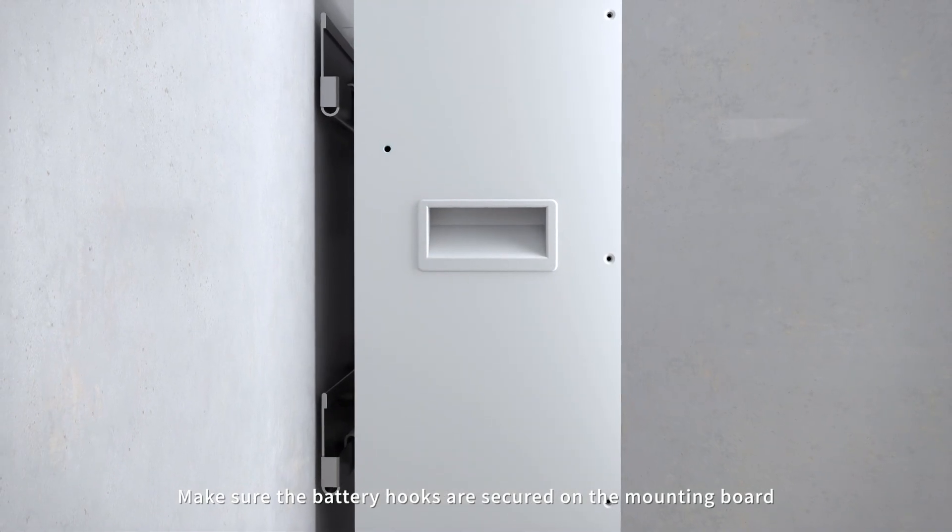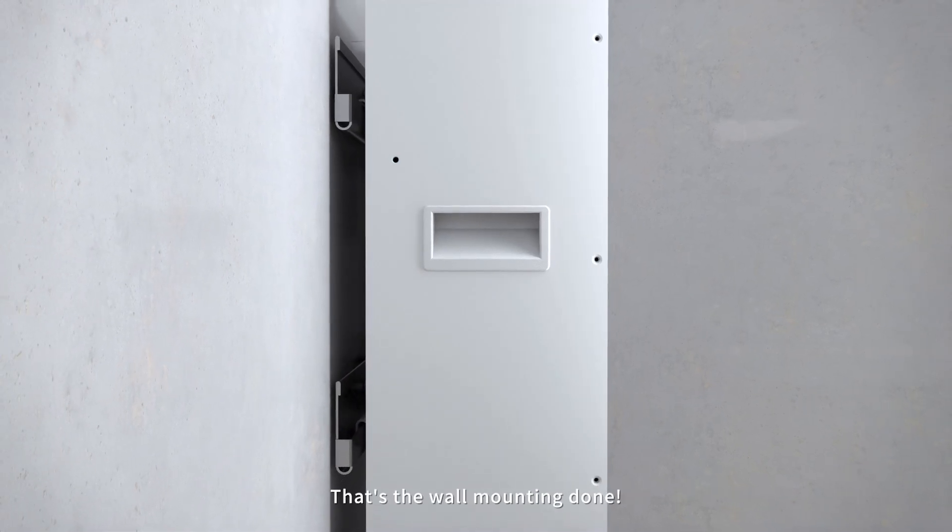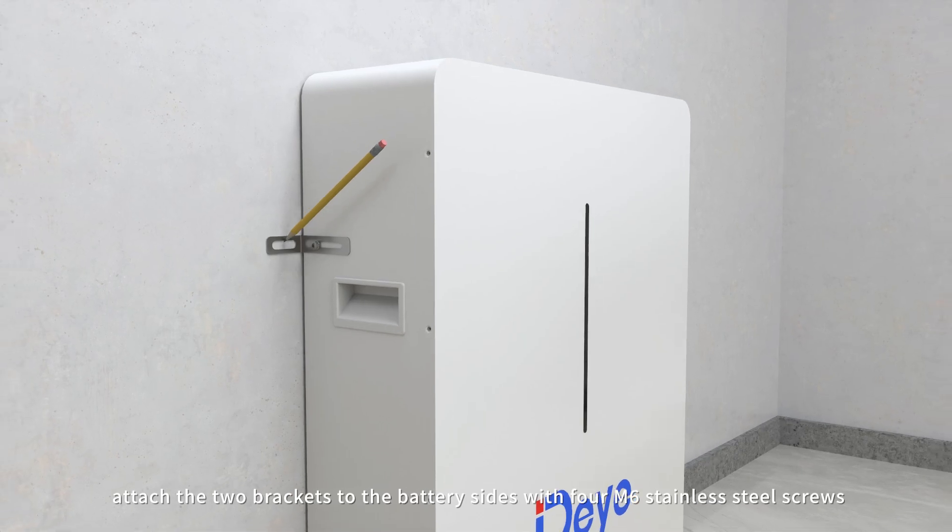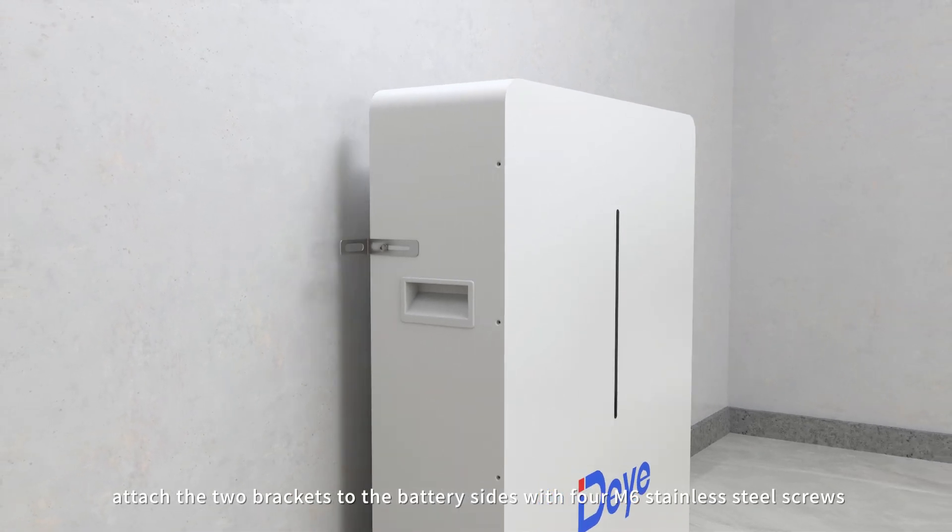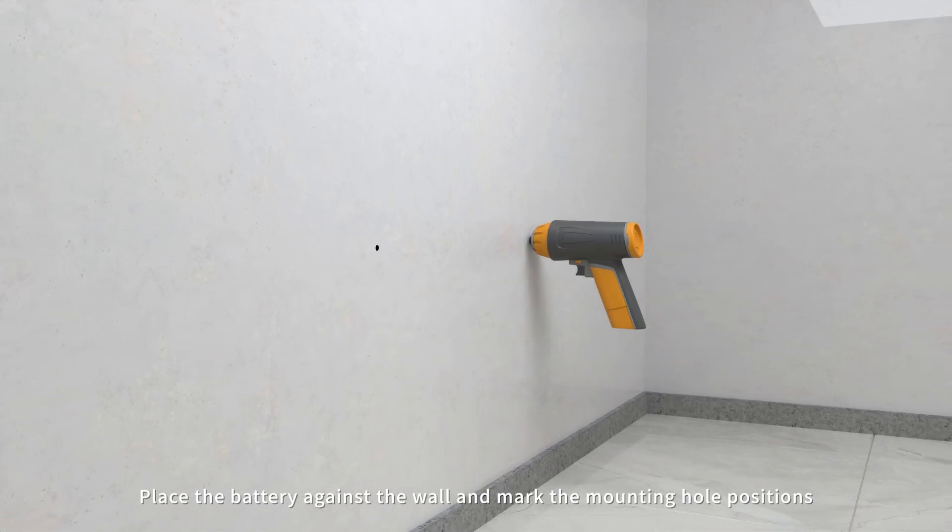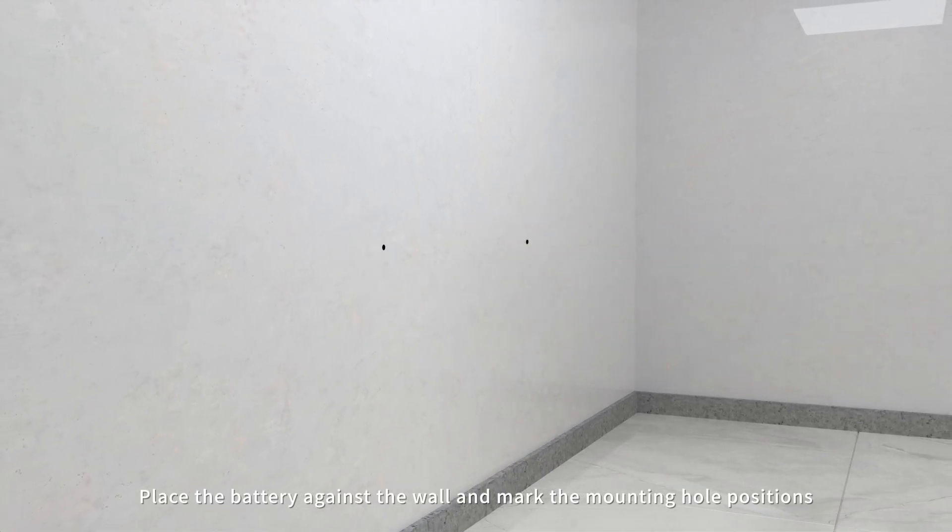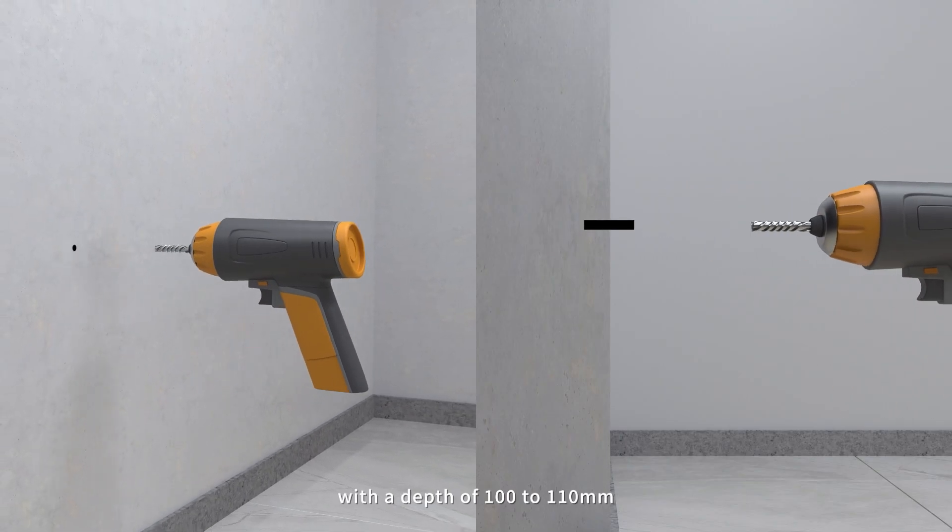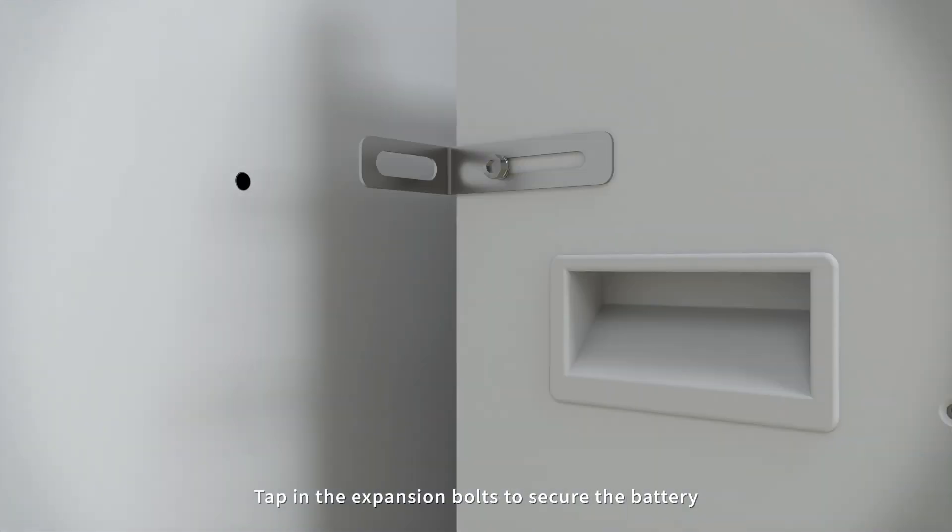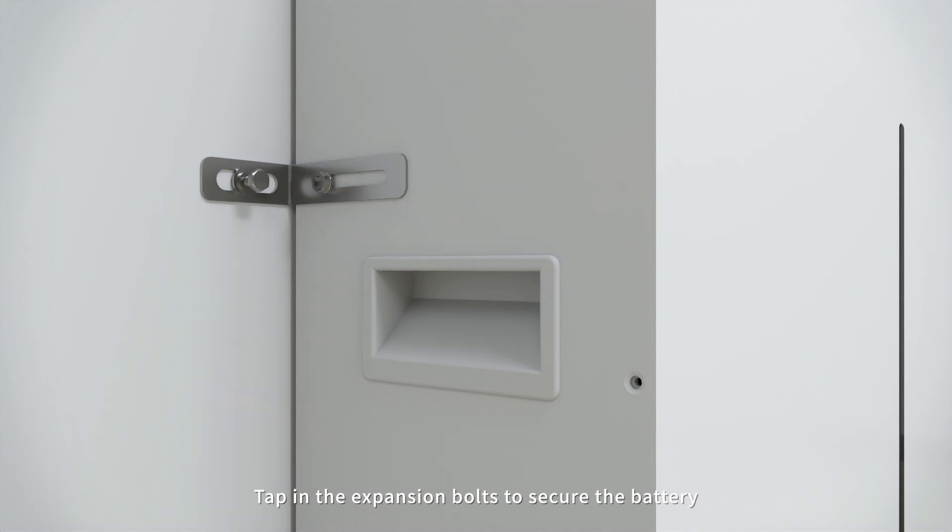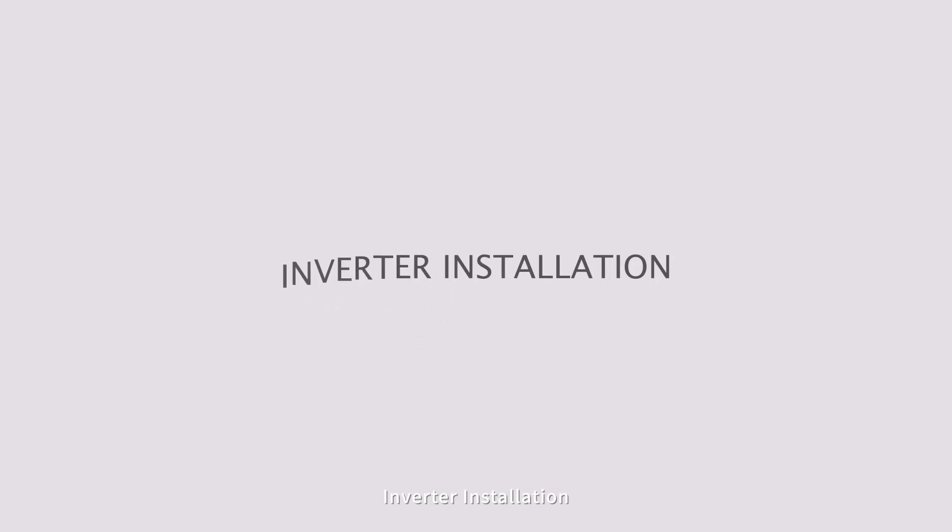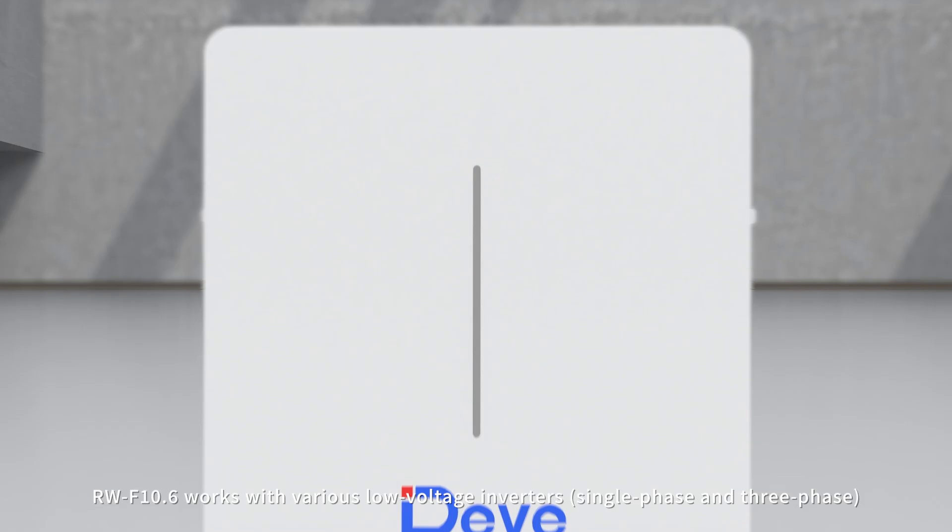For floor mounting, attach the two brackets to the battery sides with four M6 stainless steel screws. Place the battery against the wall and mark the mounting hole positions. Drill two holes in the wall with a depth of 100 to 110 millimeters. Tap in the expansion bolts to secure the battery. Adjust the side screws to ensure the battery is vertical.